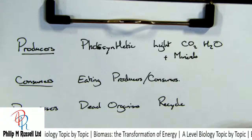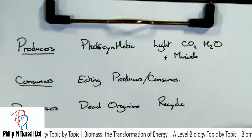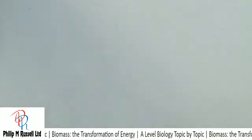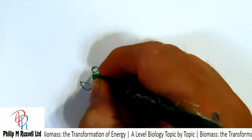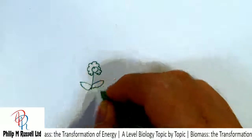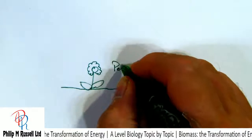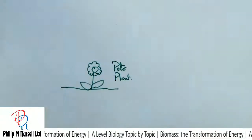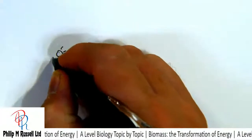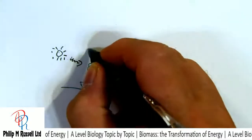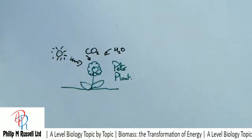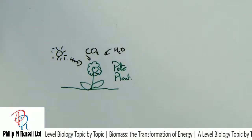We've looked at a food chain; let's try and have a look at a food web, because this is much more likely how things are going to go. Let's start with my little plant — Peter the plant. Peter takes energy from the sun, along with CO2 and H2O, everything to start the system off.